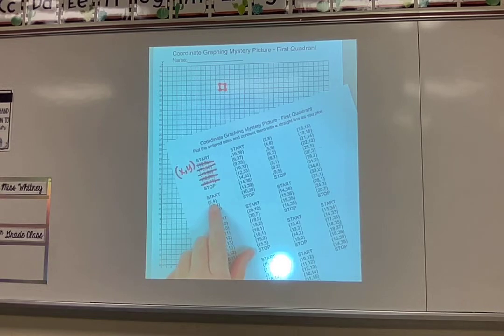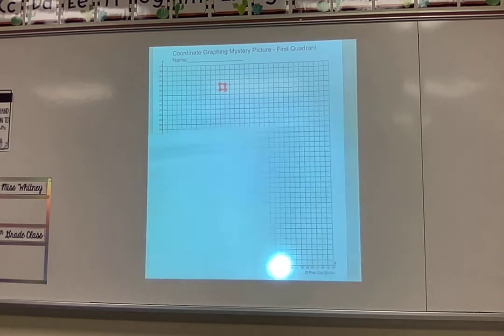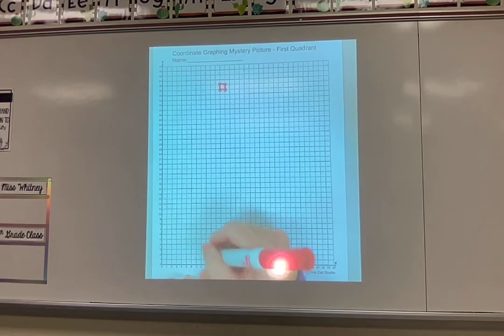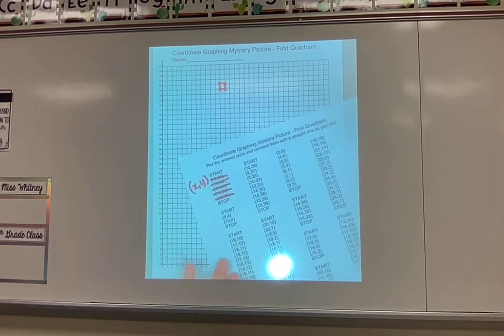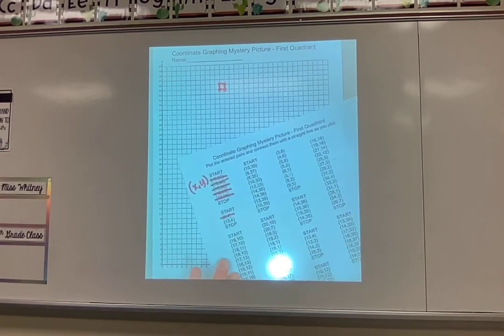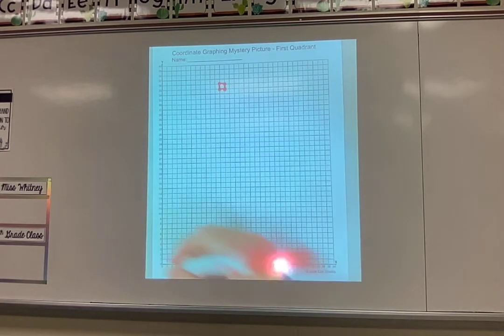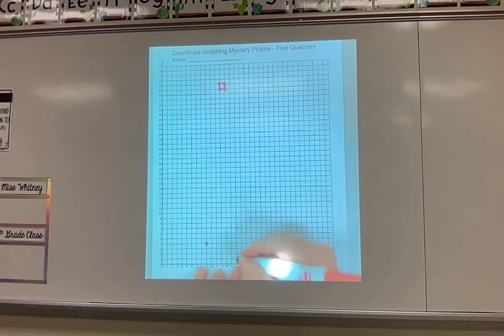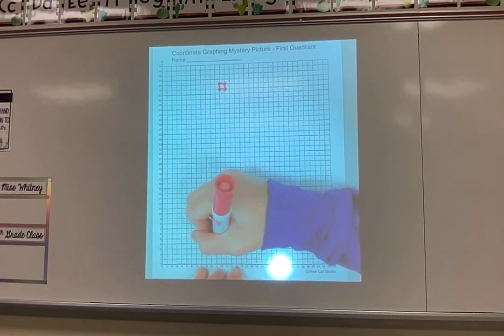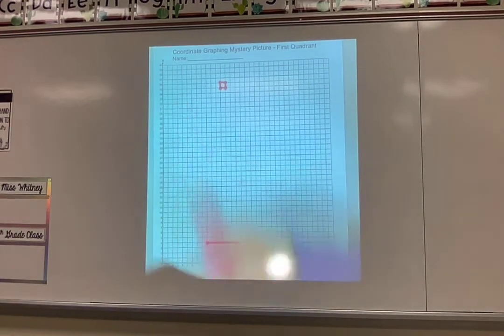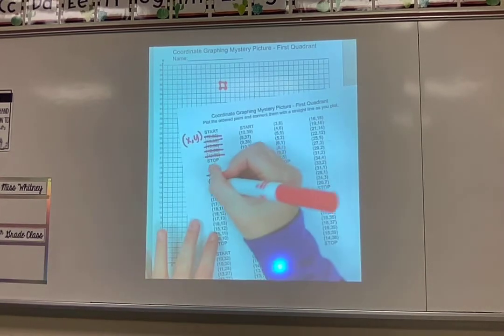So my first one says nine four. So on the X I'm going to go across to nine and then up to four. Making sure I double check before I make my dot. Then I'm going to cross that one off. My next one is fifteen four. So first on the X go across to fifteen and then up to four. Double checking before I make my dot. And these two go together so I'm going to play connect the dots here. Then I'm going to go back to my page and I'm going to cross it off.